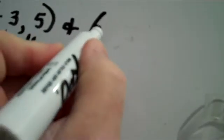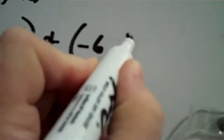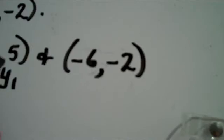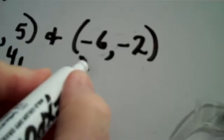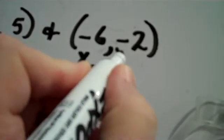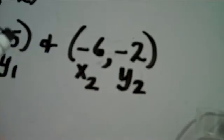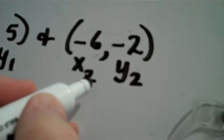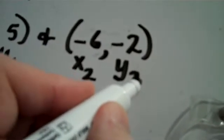And, let's take the second ordered pair, negative 6, negative 2, and label it accordingly, only we'll call it x sub 2, y sub 2, meaning the x-coordinate of point 2 and the y-coordinate of point 2.